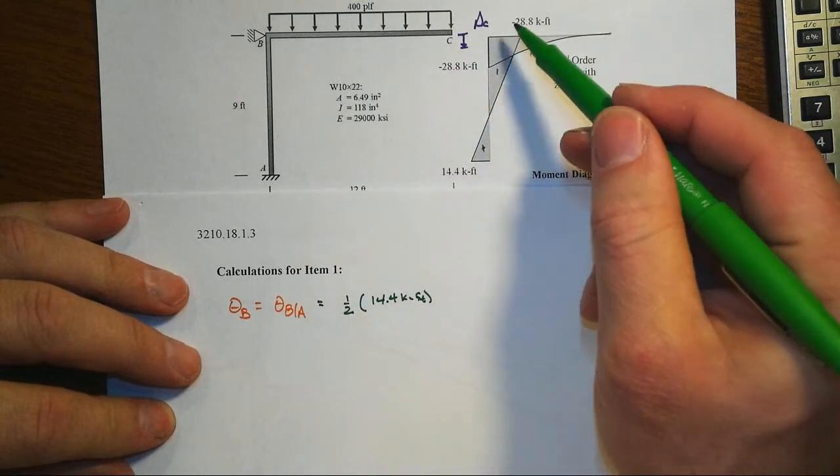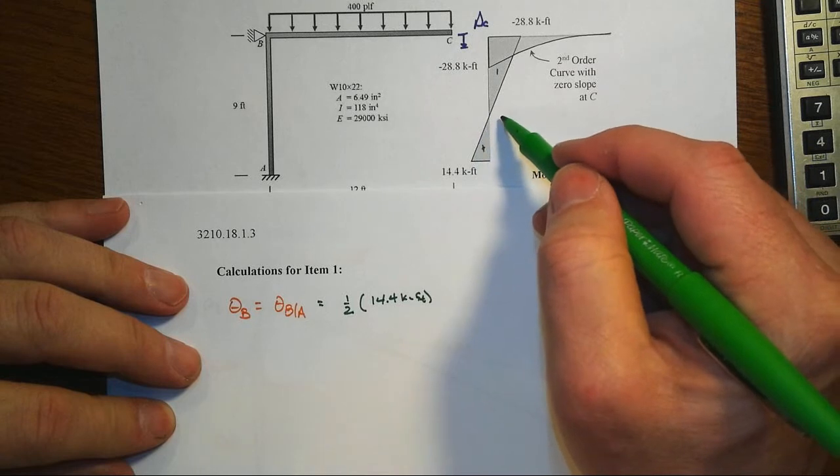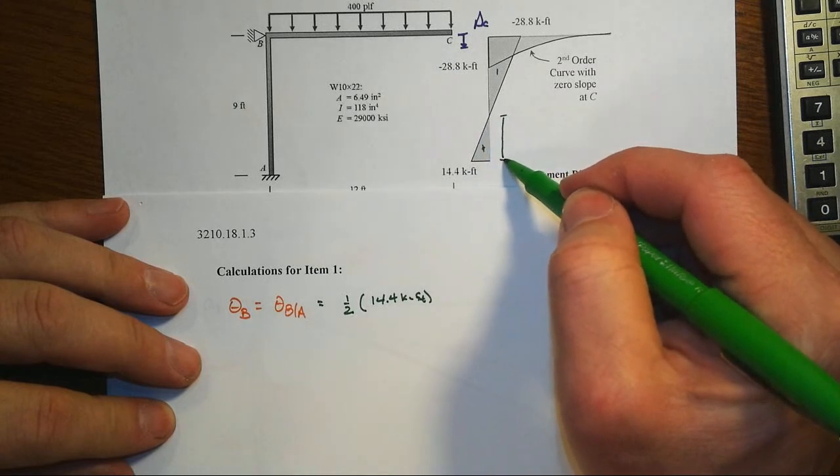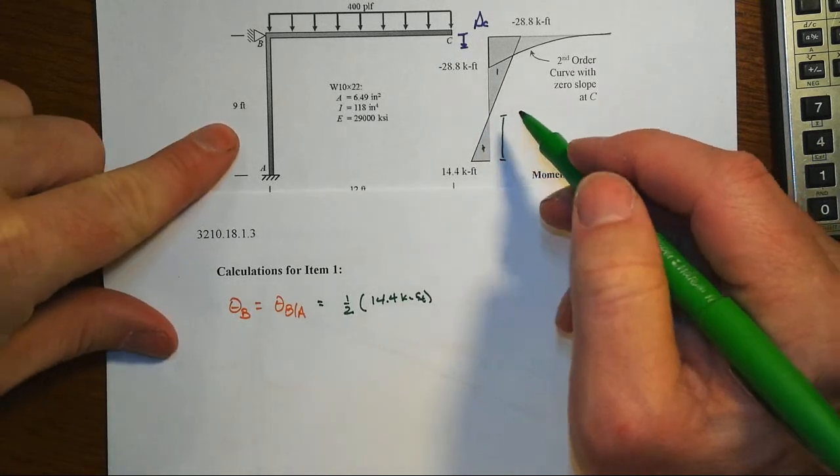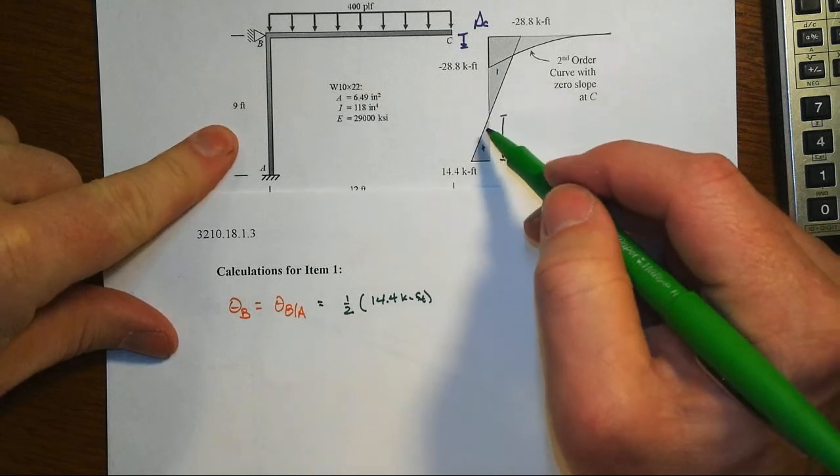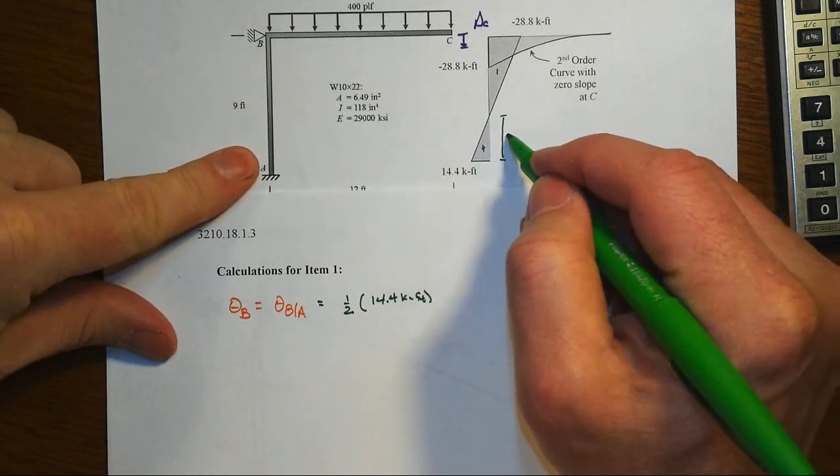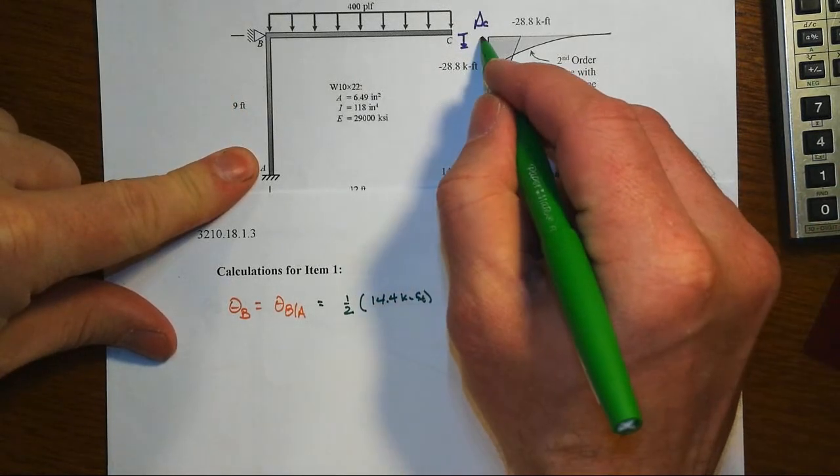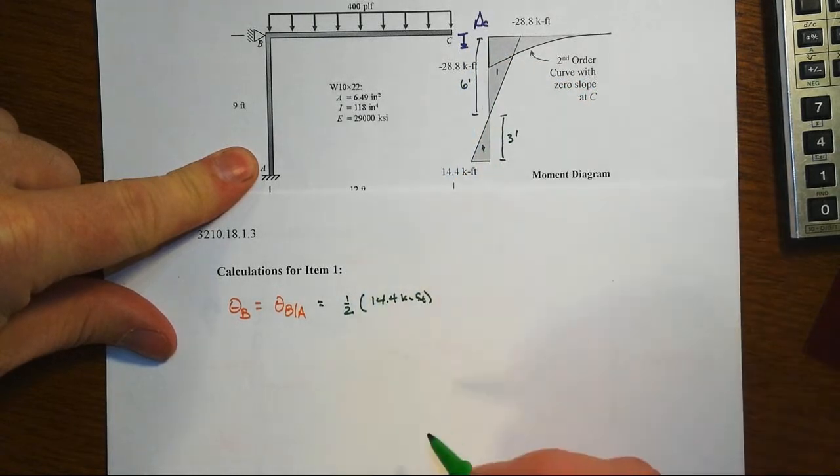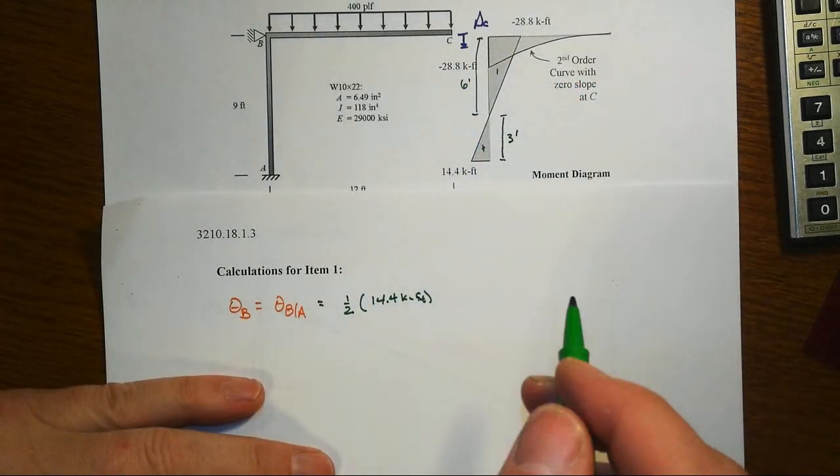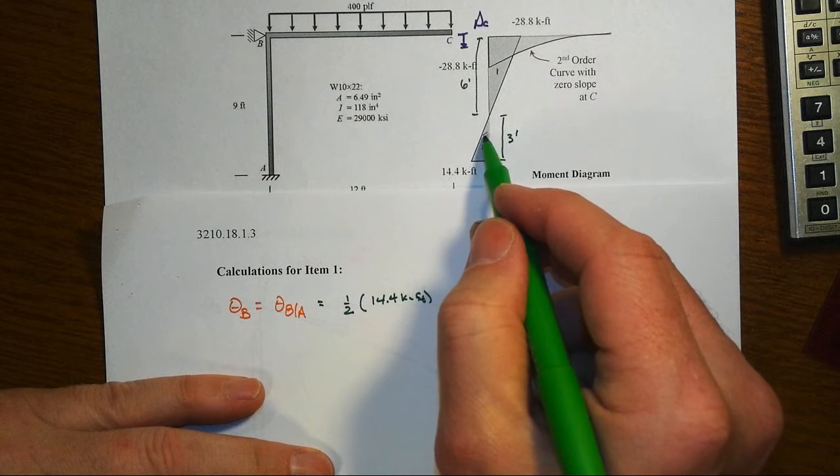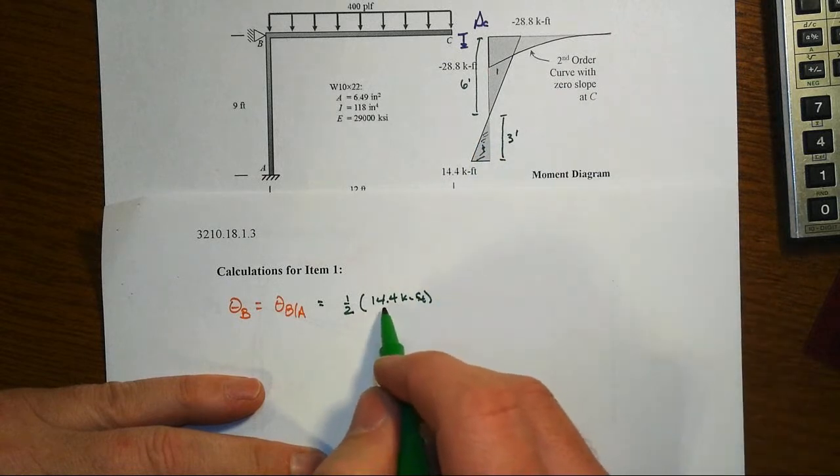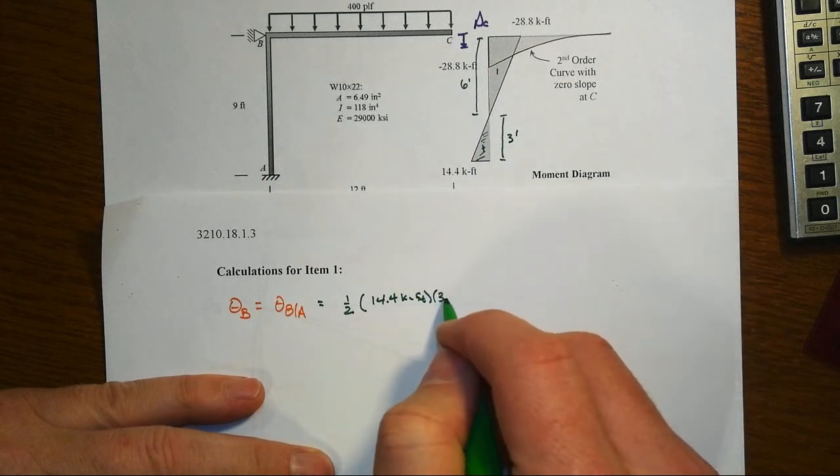and so we've got one half of 14.4 kip feet times this height. Right now notice the two to one ratio that we have here, so that means that this zero point for the moment, which is also an inflection point, is going to be set up in this two to one ratio. Since the whole length is nine, that makes this three foot and that makes six foot. So this area that we're dealing with down here, this first area, one half of this base times that height of three feet,